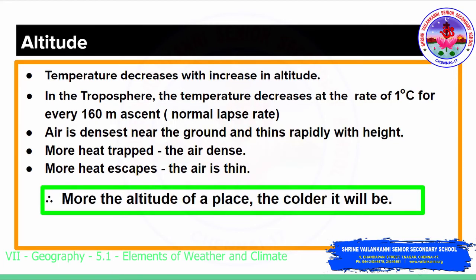The temperature decreases with increase in altitude because air is densest near the ground and thins rapidly with height. As you move higher, the density of the air decreases — as we learned in the previous lesson on layers of the atmosphere. When the air is dense, more heat is trapped and retained. When the atmosphere is thin and not dense, more heat escapes. Therefore, the greater the altitude of a place, the colder it will be. That is why we prefer to go to hilly regions during summer.